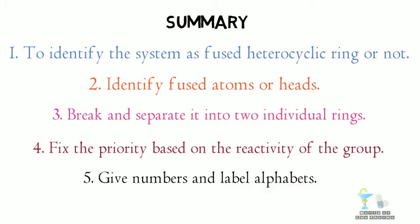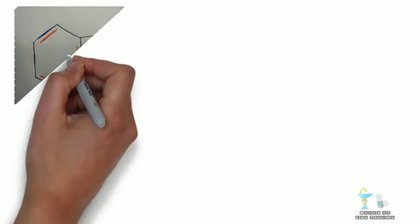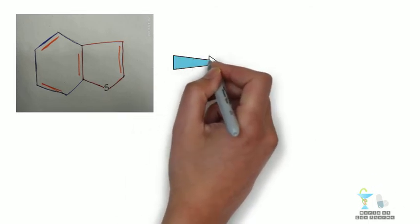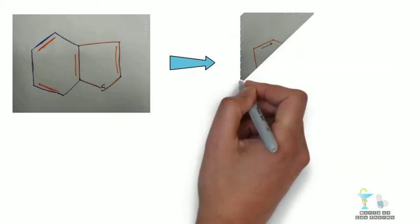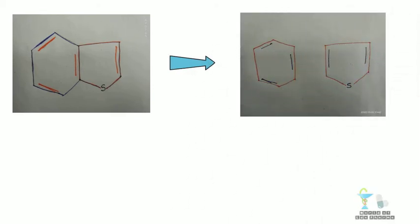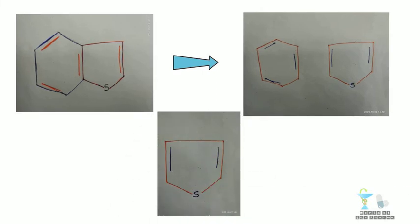Now let us see an example problem. Look at this. It is obviously a fused ring. Now, just break it. We get two different atoms and we can start numbering the heterocyclic atom, starting from the sulfur atom.